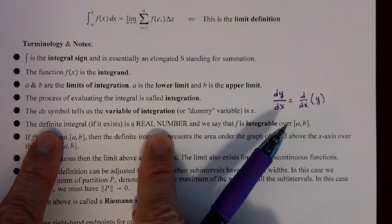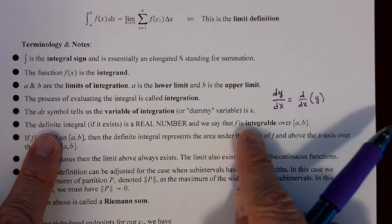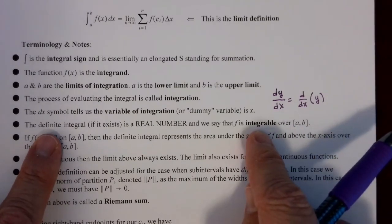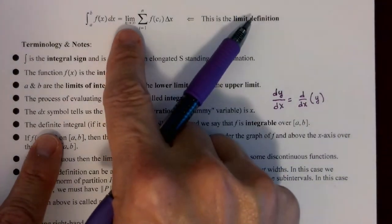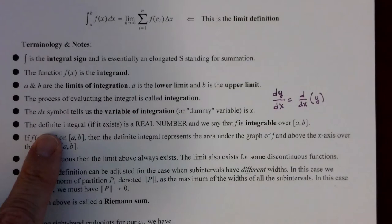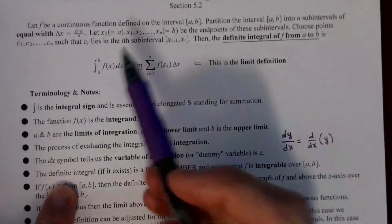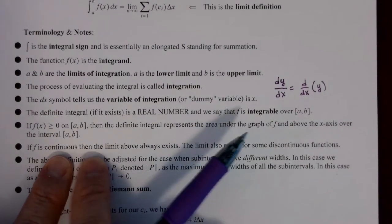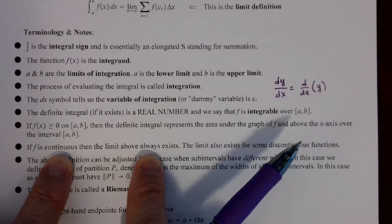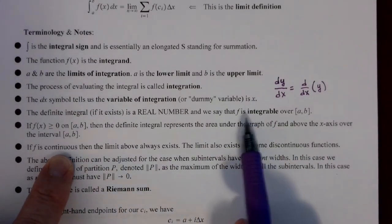The definite integral, if it exists, is a real number. If it does exist, we say the function f is integrable over that interval. Not all functions are integrable because the limit may not exist. However, if the function is continuous, then that limit always exists — so all continuous functions are integrable. The limit also exists for some discontinuous functions, so some discontinuous functions are integrable too.